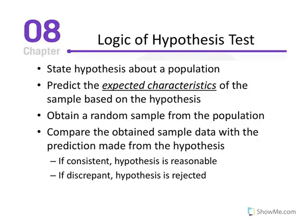In simple terms, the logic underlying hypothesis testing is as follows. First, we state a hypothesis about a population. For instance, in the textbook example, individuals receive electric brain stimulation to improve math skills. We might hypothesize that if the entire population were given this treatment, the treated population average score on a standardized test would equal 100.